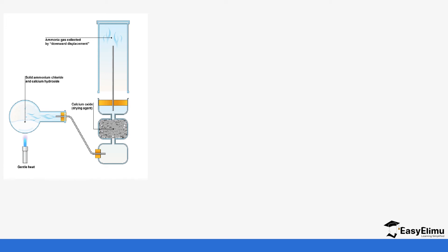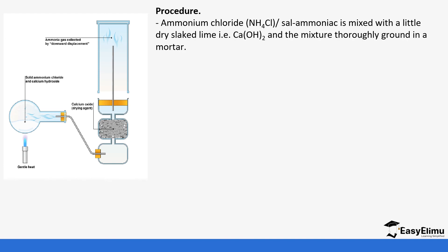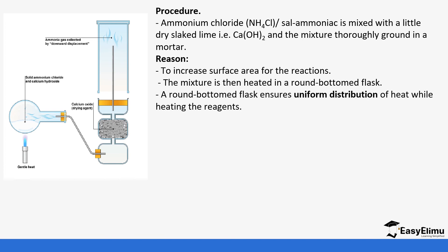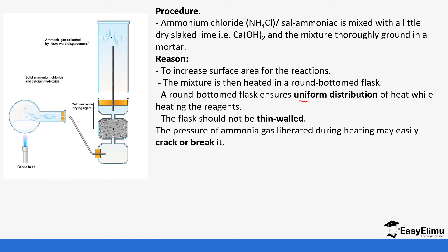In this setup, ammonium chloride and calcium hydroxide are used. The mixture is heated and the flask is slanted. Ammonium chloride is mixed with a little dry slaked lime — calcium hydroxide — and the mixture is thoroughly ground in a mortar to increase the surface area for reaction. The mixture is heated in a round-bottomed flask, which ensures uniform distribution of heat. The flask should be thin-walled because the pressure of ammonia gas liberated during heating may crack or break it.